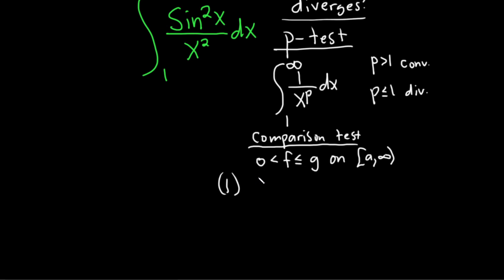then if the bigger one converges, so say g converges, then the smaller one also has to converge. And that should make sense, right? If you think of this improper integral as an area, and this one as an area,